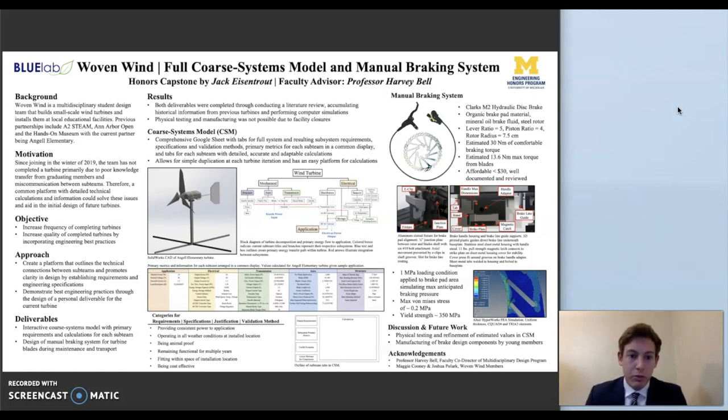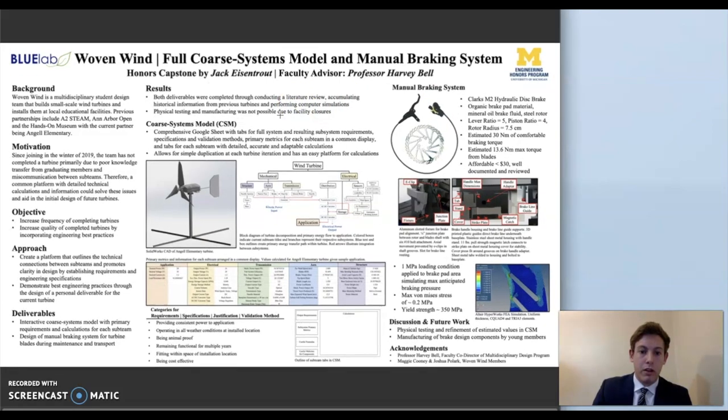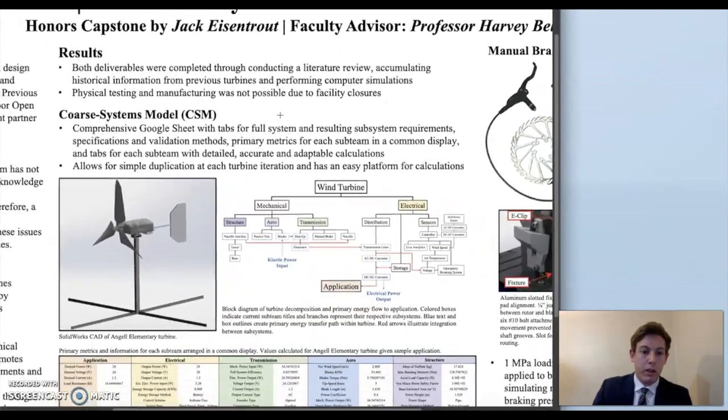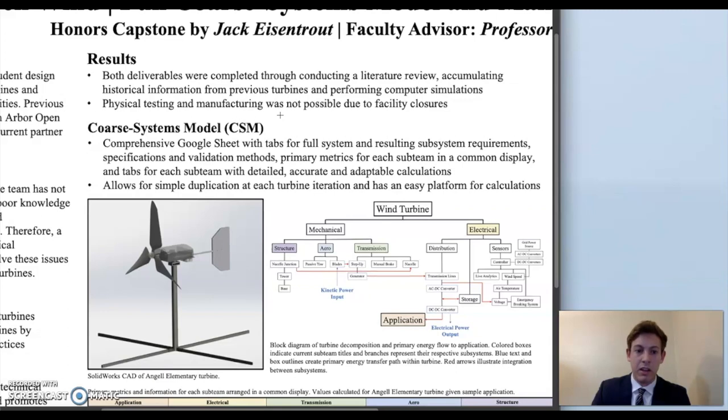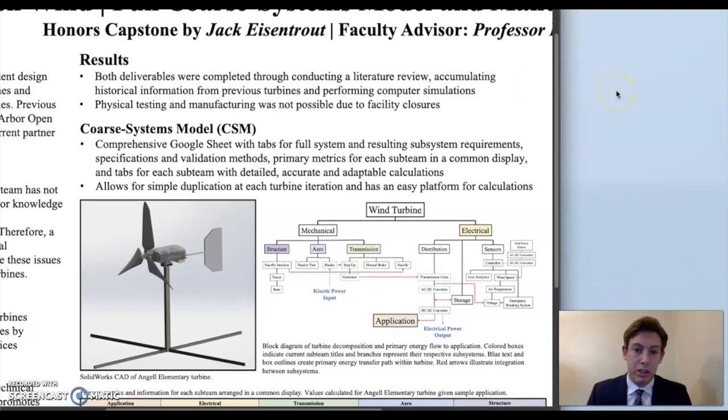Both of these deliverables were completed through conducting a literature review, accumulating historical information from past turbines, performing computer simulations, and doing extensive calculations for the mechanical design. But unfortunately, due to the COVID-19 outbreak, the Wilson Center was closed and manufacturing of certain braking system components was not able to happen, and general testing of the wind turbine was not able to happen either on the Wilson Center roof. So that's something for the future.